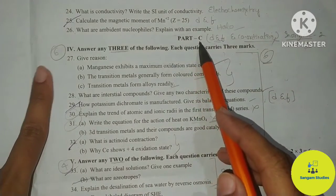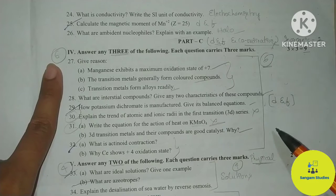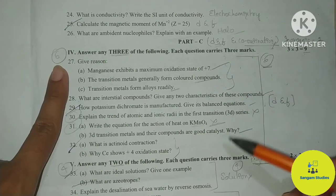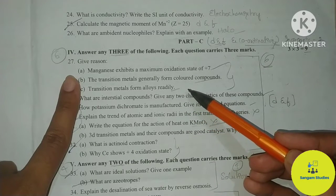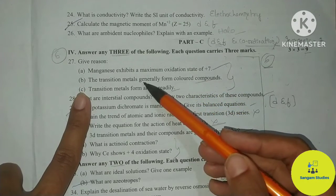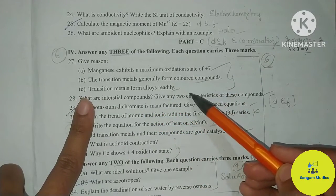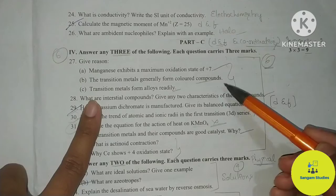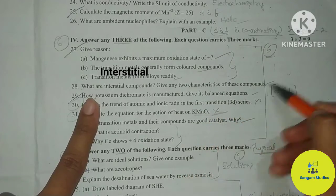In Part C, it is completely dedicated for inorganic chemistry — that is D and F block and coordination compounds. In this section, you will have only D and F block elements questions. The first question is a 'give reason' type. Questions include: Manganese exhibits a maximum oxidation state of +7; Transition metals generally form colored compounds; Transition metals form alloys readily. What are interstitial compounds? Give any two characteristics of these compounds — this is a direct question.